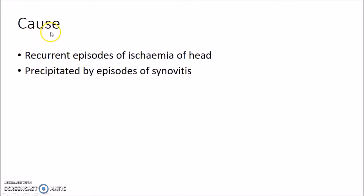What are the causes of Perthes disease? Perthes disease is caused due to recurrent episodes of ischemia of the head of femur. It is precipitated by episodes of synovitis.